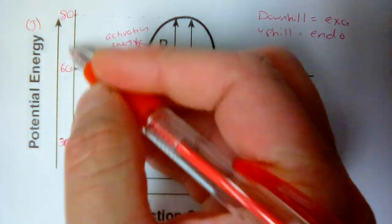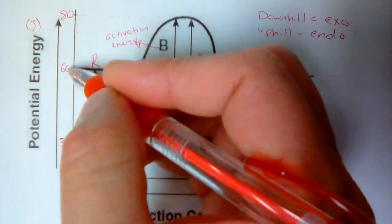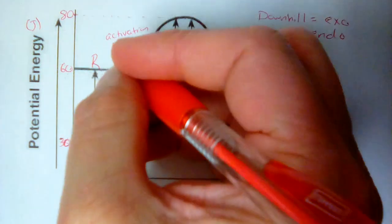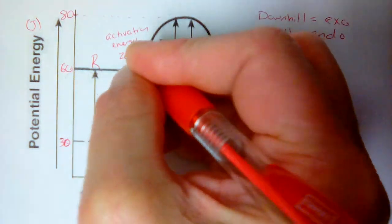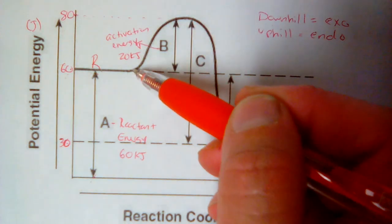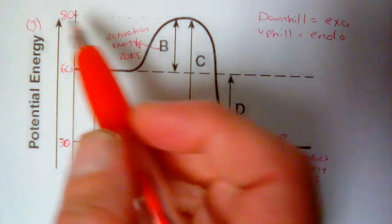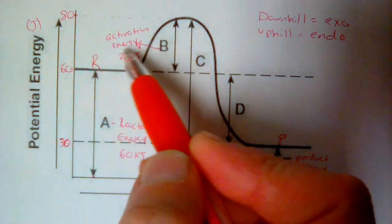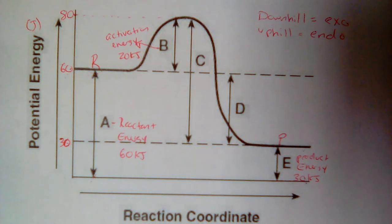In this case, what we would do is subtract the big number from the little number, 80 minus 60, and we'd say it's 20 kilojoules of activation energy. The difference between your highest point and your reactants is the activation energy. So again, I just subtract 80 from 60, 20 kilojoules of activation energy.